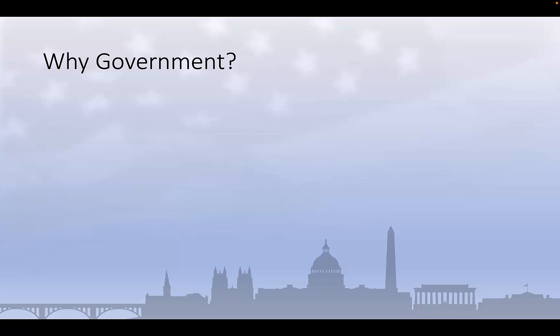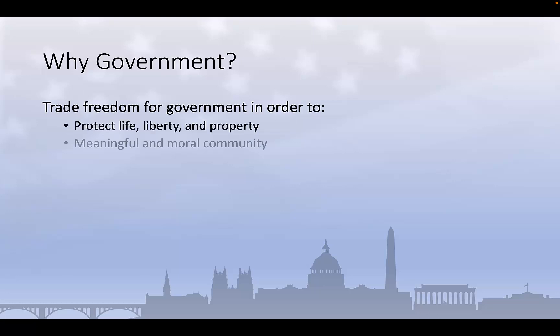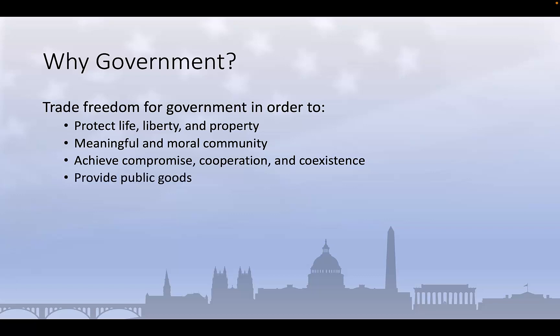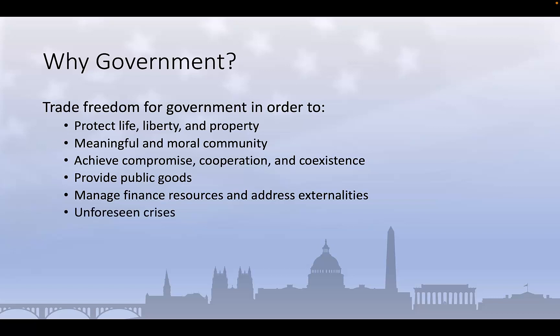Because the state of nature is so abhorrent to human progress and well-being, social contract theorists contend that we give up a degree of our freedom in order to secure a government that performs a number of important functions, including protecting life, liberty, and property; guaranteeing a meaningful and moral community; achieving compromise, cooperation, and coexistence among individuals with competing goals and interests; enabling the provision of public goods; managing finite resources; taxing negative externalities like pollution; and subsidizing positive externalities like education or common defense; and protecting against unforeseen future crises that require a collective response.